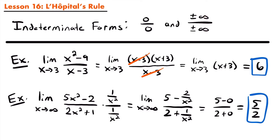In both cases — the form of 0 divided by 0 and infinity divided by infinity — we were still able to evaluate the limits using algebraic manipulation. However, there are going to be some limits involving indeterminate forms that cannot be evaluated that way; there will be no way to manipulate them algebraically into a form we can evaluate.